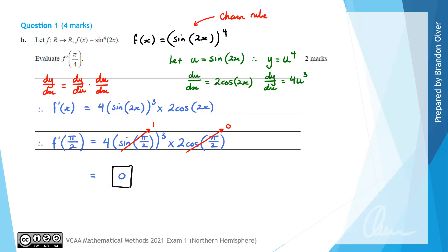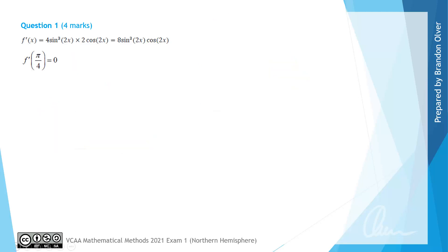So that is the answer to question 1b. And looking at the examiner's report, which is light on for detail, we can just see that the answer to that question was indeed f'(π/4) equals 0.